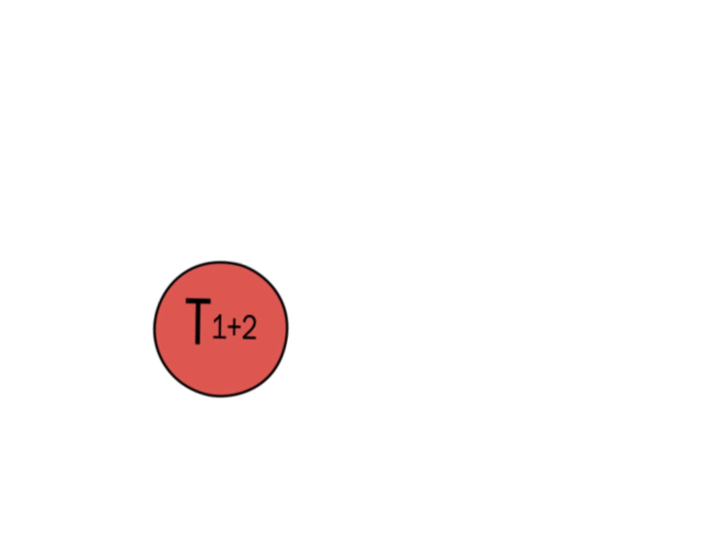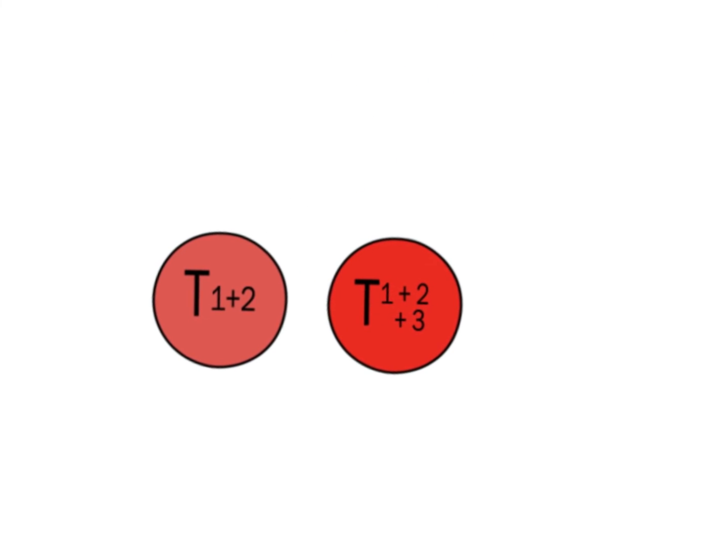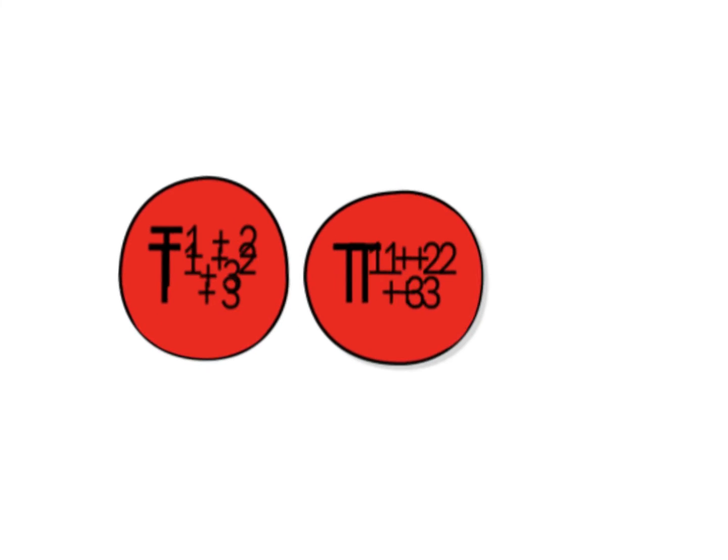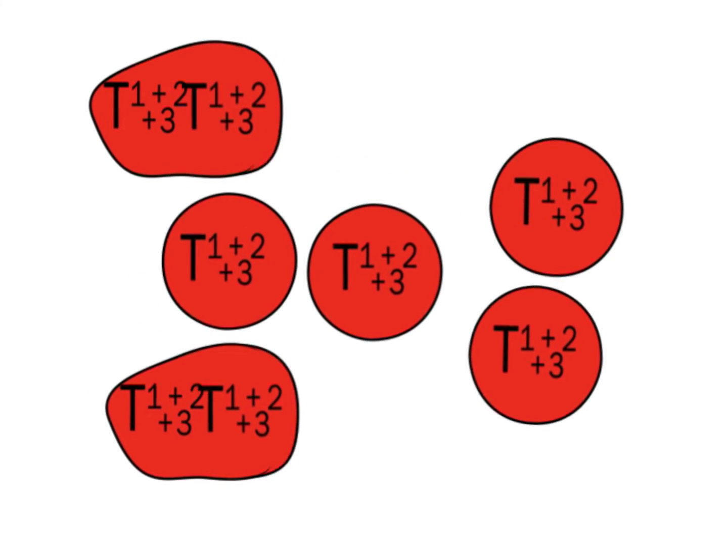Subsequently, one of the T1 plus 2 clone cells is hit by a third event. The T1 plus 2 plus 3 cell formed has a growth advantage over the previous clones. The clone expands due to an increased rate of cell divisions and a decreased rate of apoptosis.